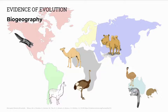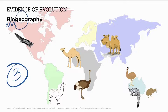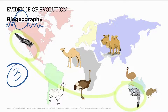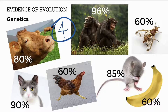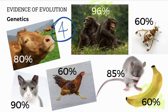Number three is biogeography, where we look at living things in different places, studying the species distribution on Earth. Some plants and animals are similar on different land masses, so scientists suggest these similar organisms may have a common ancestor if these continents were at one stage one land mass. Number four, we look at genetics as evidence of evolution — we compare the DNA between species. For example, humans are 60% similar to bananas and 96% similar to chimps. The closer the similarities, the closer the relationship, the more recent the common ancestor.